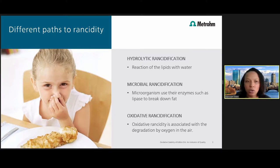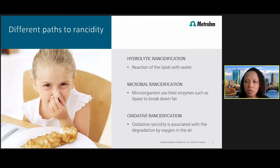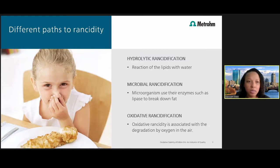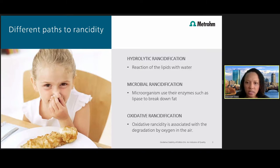Oxidative rancidification, also called lipid peroxidation, is caused by the degradation by oxygen in the air. This is the main cause of rancidity of lipids, as oxygen is eight times more soluble in oil as it is in water. During this process, double bonds of unsaturated fatty acids present in oils are cleaved by free radical reactions involving molecular oxygen. This reaction causes the release of bad-smelling and highly volatile aldehydes and ketones. How quickly oils and fats go rancid due to the influence of oxygen is dependent on the sample's oxidative stability. For the rest of our discussion, I will focus on oxidative stability and how it can be monitored using the Ransomat method.